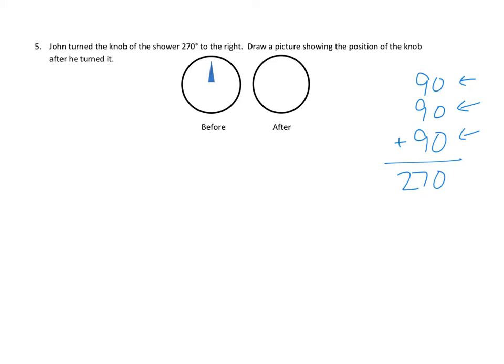So, one of the ways we could think of this is that we start off with the knob pointed this way, and we could think of this as moving three quarter turns to the right. So, let's see. One quarter turn would be here, and one quarter turn would be here, and one more quarter turn. And our third quarter turn would have us pointed this way.